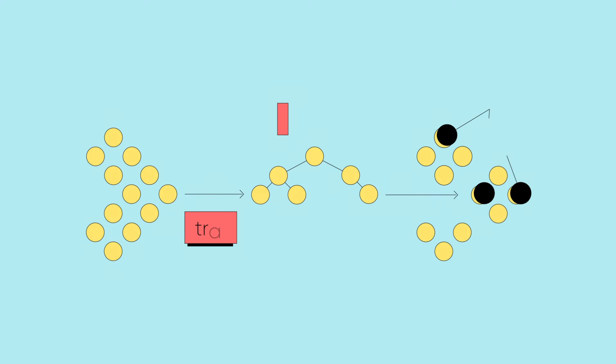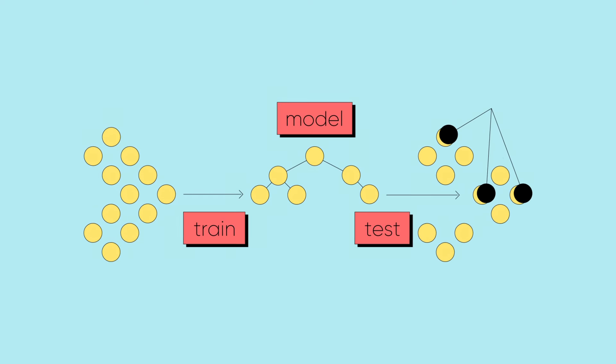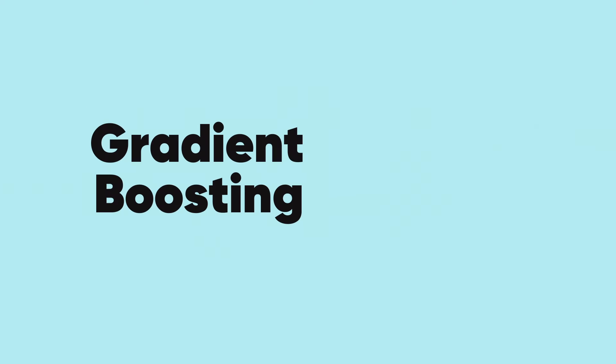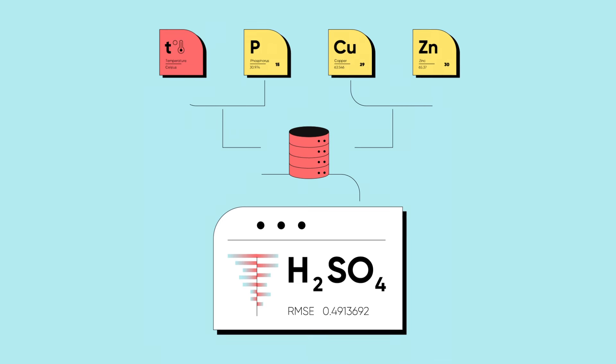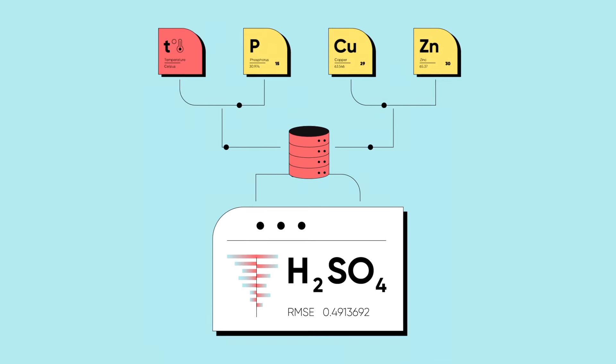Thanks to feeding data from IoT sensors to an AutoML system based on the gradient boosting machine learning technique, ArtWater provides visualized predictions of sulfuric acid, copper, and zinc concentration.